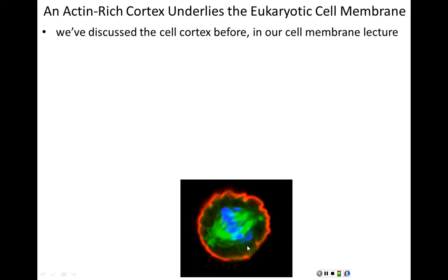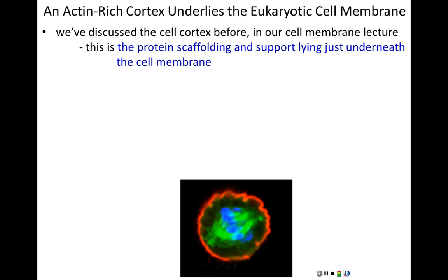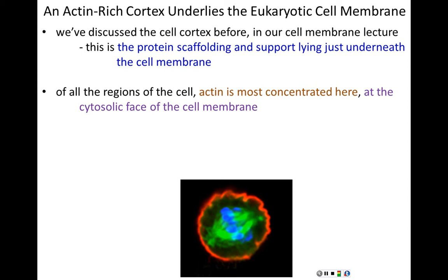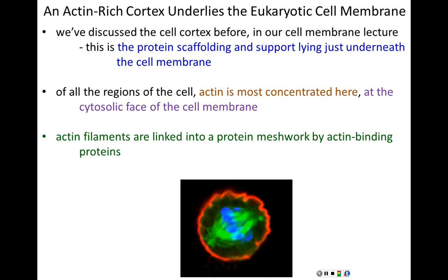The cell cortex is the actin-based protein scaffolding that supports the cell membrane by lying just underneath it. Of all the regions in the cell, actin is most concentrated just below the cell membrane — at the cytosolic face — so that it can be the primary component of the cell cortex. To make the cell cortex, actin filaments are simply linked together into a protein meshwork by the specific accessory protein that allows actin to form the cell cortex.